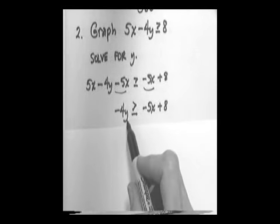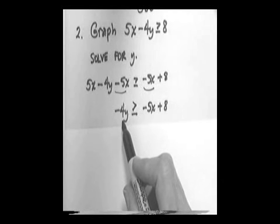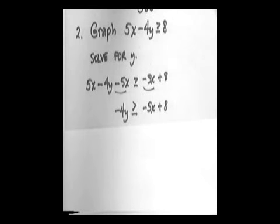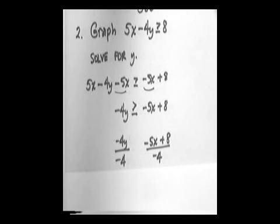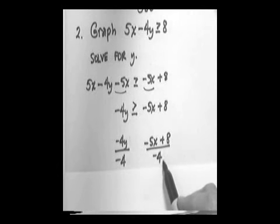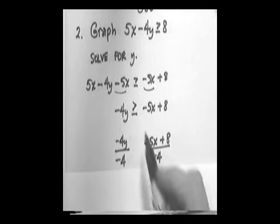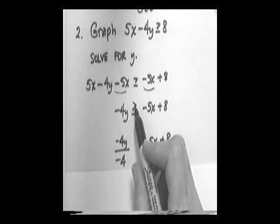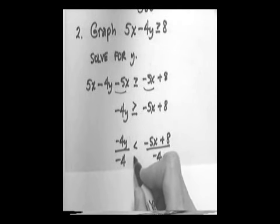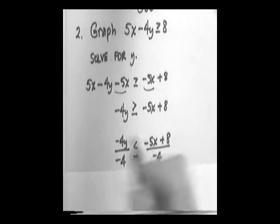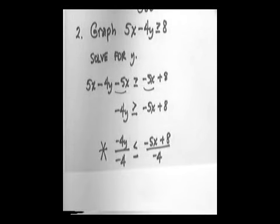To get y by itself, we must divide both sides by the coefficient of y, which is negative 4. Remember that when you divide both sides of an inequality by a negative number, the inequality symbol reverses. Greater than or equal to becomes less than or equal to. This is where the inequality symbol reverses.